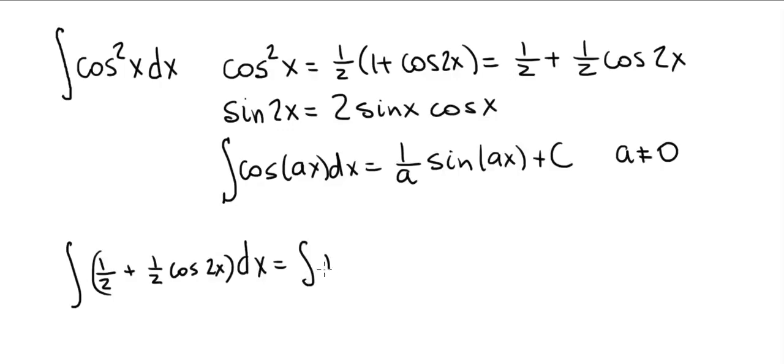So this is really two integrals. The first one is the integral of 1 half dx. And the second one is the integral of 1 half times cosine of 2x. Now clearly the integral of 1 half is 1 half x.